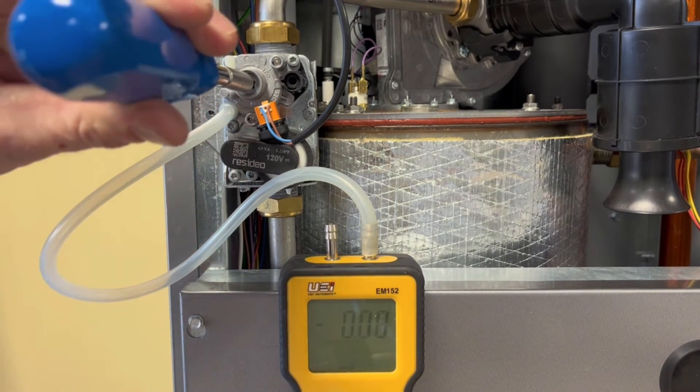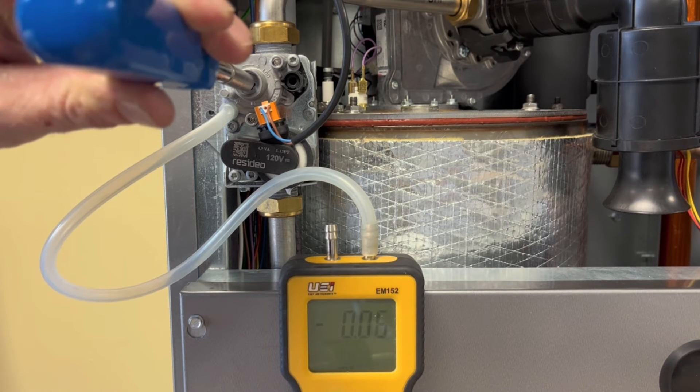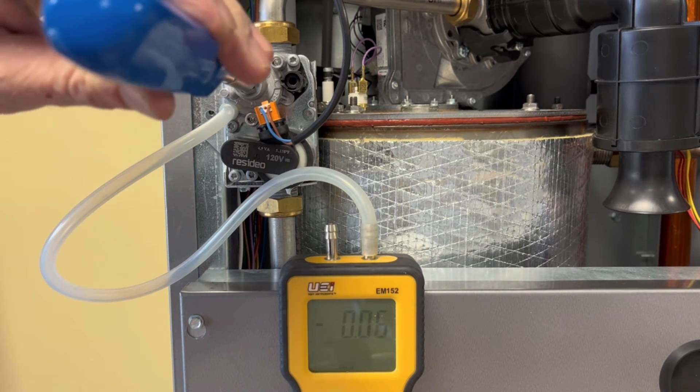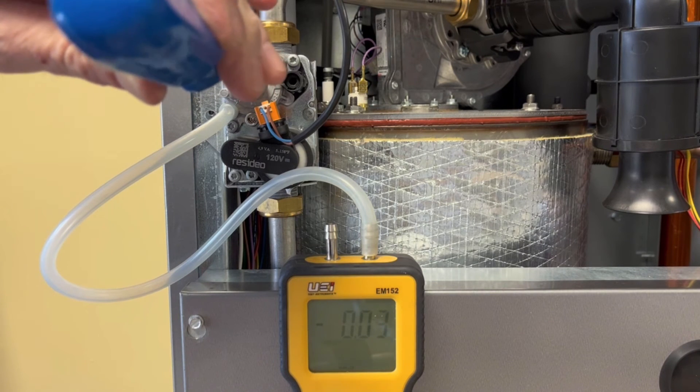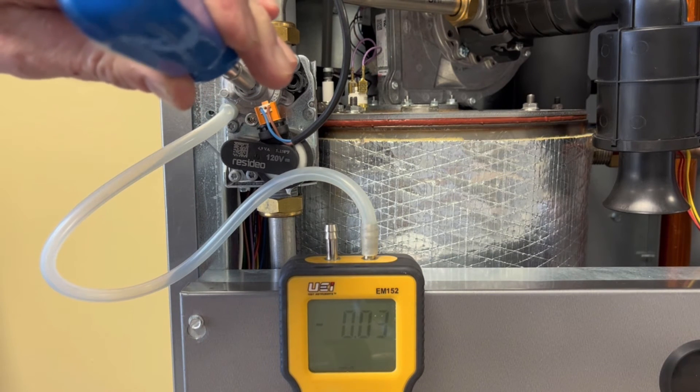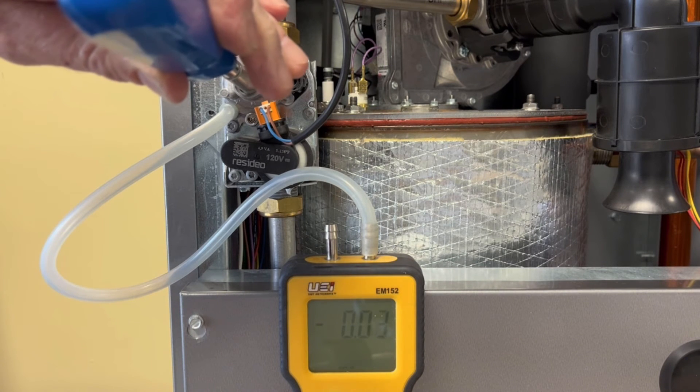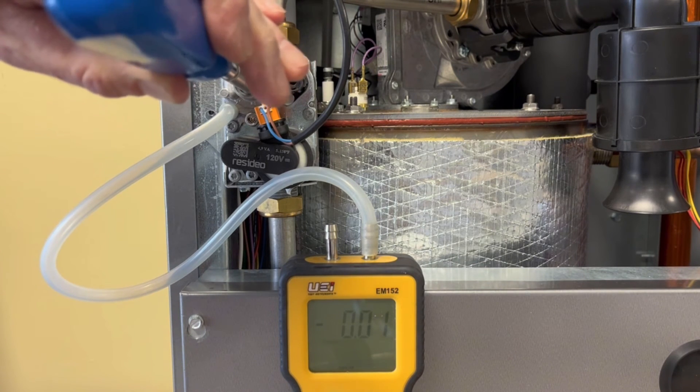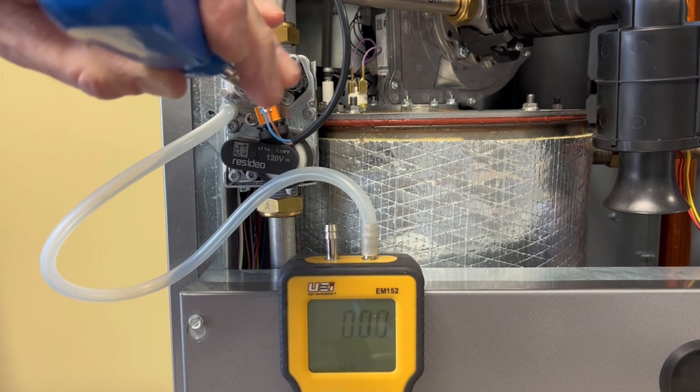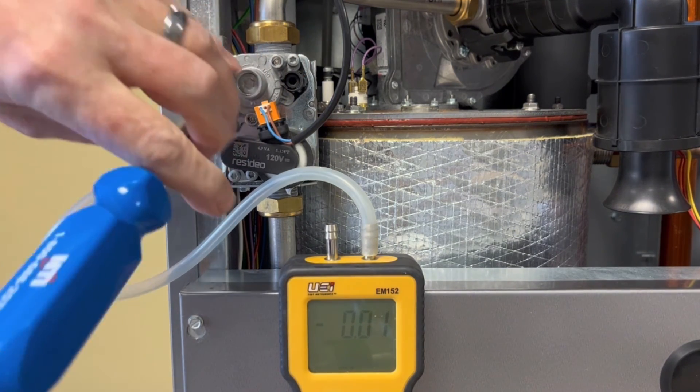Ensure you zero your manometer before beginning this procedure. Carefully and slowly adjust the screw until you see approximately zero inches water column on your manometer. At that point, you can now complete a low fire combustion analysis. Use the specifications in the installation manual to set the CO2 to the correct setting.